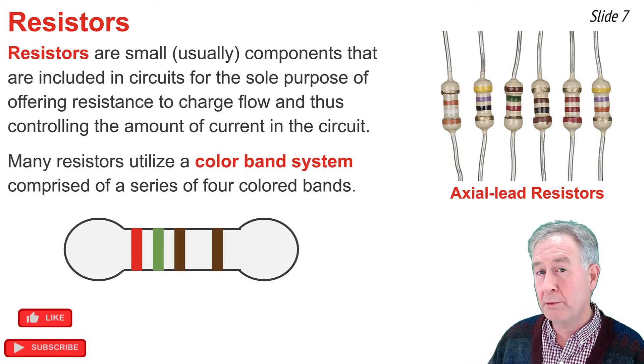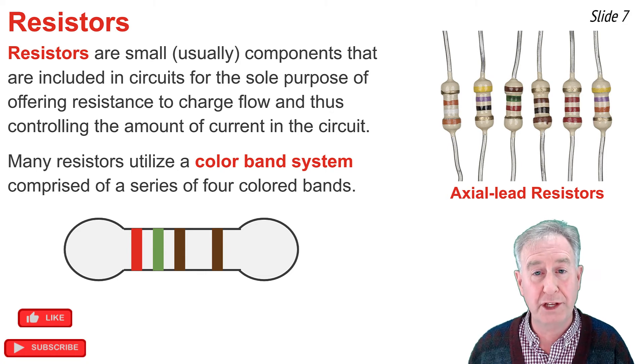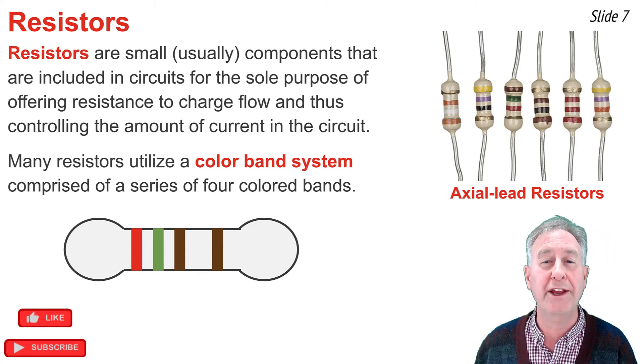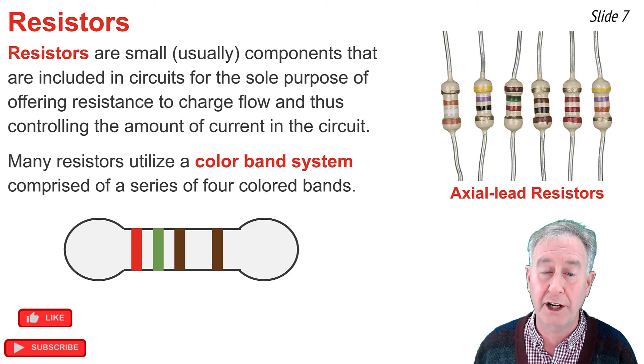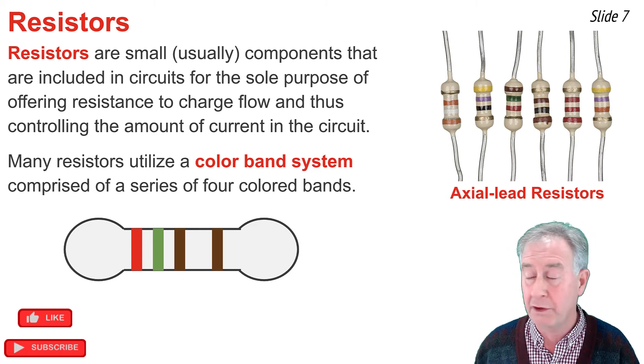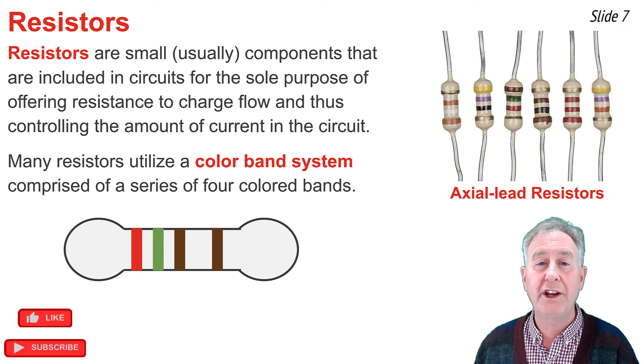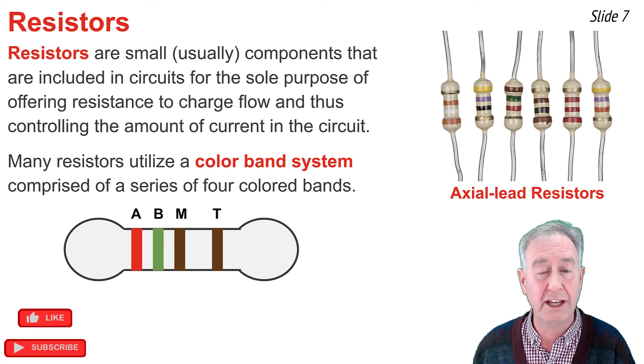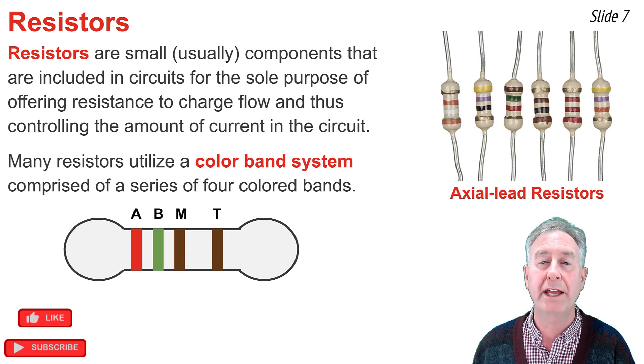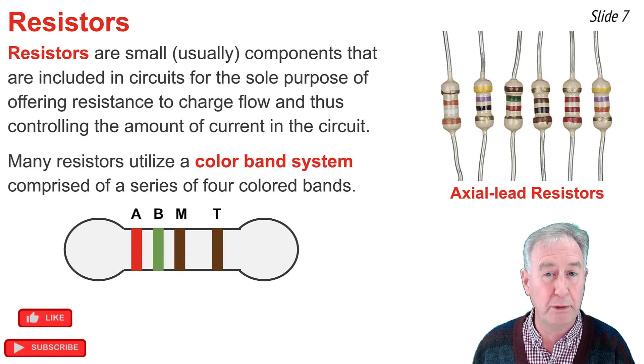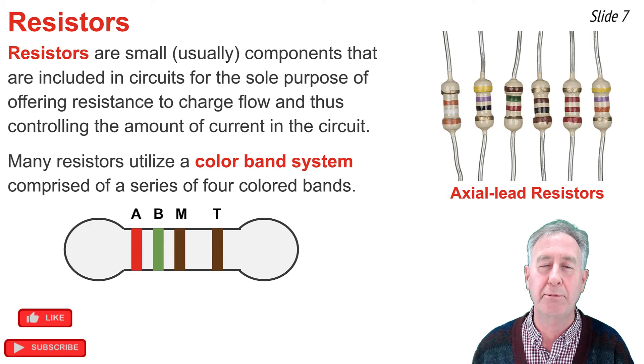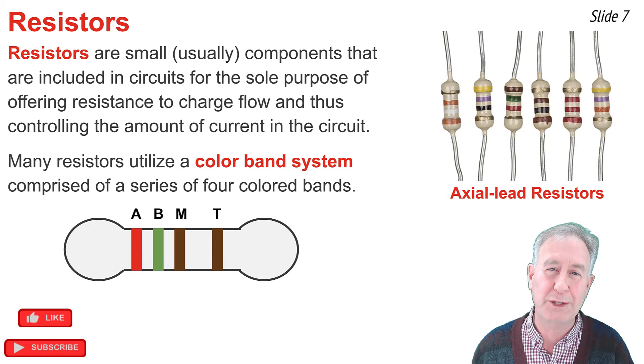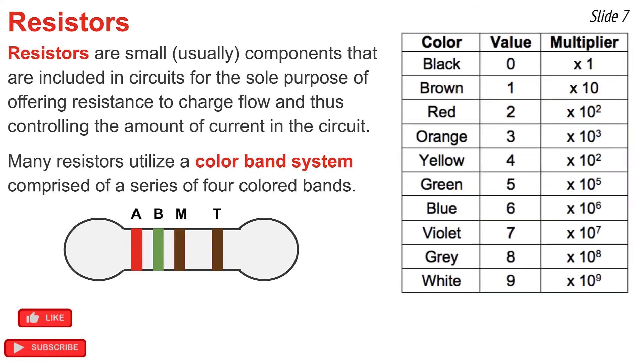Let's learn how to use the color band system in order to determine the resistance value of these resistors. This diagram represents a resistor with its four color bands. Notice that three of the bands are very close together, and the distance between the fourth band and the third band is a little bit larger. Lay the resistor in front of you in the manner that is shown. Now I'm going to label the colored bands with a letter, the first band being labeled a, the second band b, the third band is labeled m for multiplier, and the fourth band is labeled t for tolerance. Now I need a chart that helps me to convert colors to numerical values. Here is the chart.